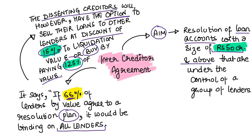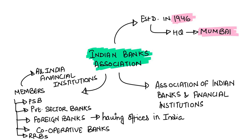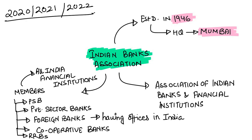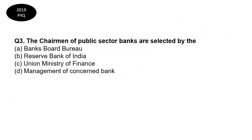The Indian Banks Association, established in 1946 and headquartered in Mumbai, is an association of Indian banks and financial institutions. Its members include all-India financial institutions, public sector banks, private sector banks, foreign banks with offices in India, cooperative banks, and regional rural banks (RRBs). Its objective is strengthening the development and coordination of the Indian banking system.